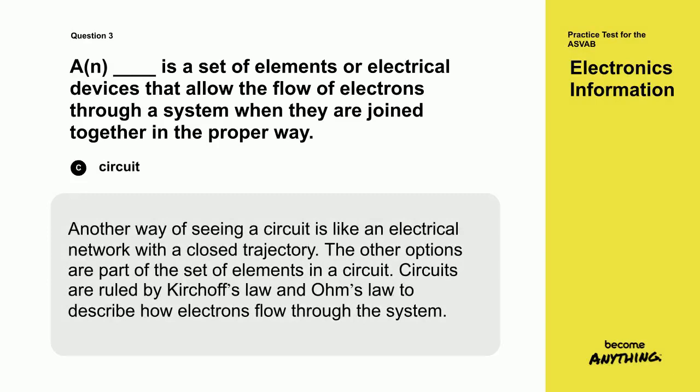Another way of seeing a circuit is like an electrical network with a closed trajectory. The other options are part of the set of elements in a circuit. Circuits are ruled by Kirchhoff's law and Ohm's law to describe how electrons flow through the system.